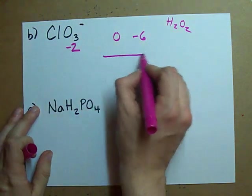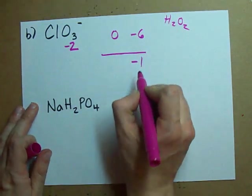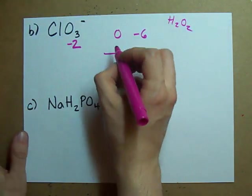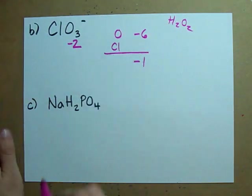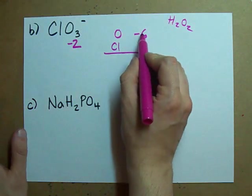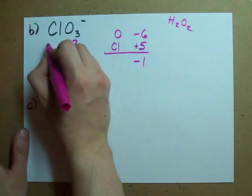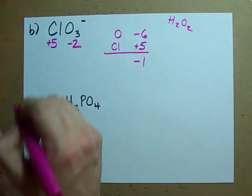I want a total charge of minus one. See there's a little minus there? So what charge does my Cl need to go from minus six to minus one? Hopefully it's obvious that it wants a charge of plus five.